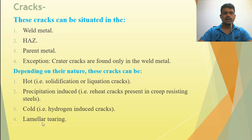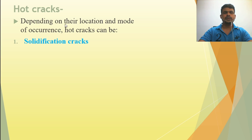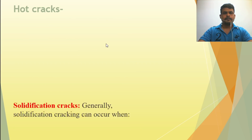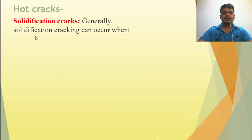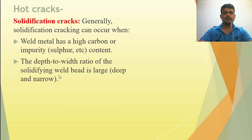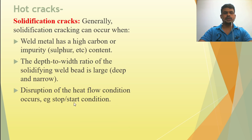Another defect is laminar tearing. Regarding hot cracks: depending on their location and mode of occurrence, hot cracks can be solidification cracks or liquidation cracks. Solidification cracks occur in the weld metal, usually along the centerline, as a result of the solidifying process. Solidification cracks generally occur when the weld metal has high carbon or impurity content such as sulfur, when the depth-to-width ratio of the solidifying weld bead is large (deep and narrow), or due to heat stop-start conditions.